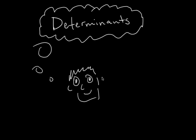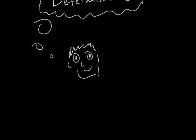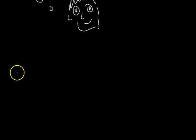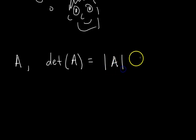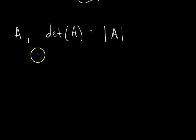In this video specifically, we're going to go over cofactor expansion, and then in the next video we'll go over how to row reduce and find it. But really quick, we have some prerequisites — just the notation. So you have a matrix A, and the determinant of A is written like this, or you can write it with two vertical bars. A two-by-two matrix's determinant is very easy to calculate.